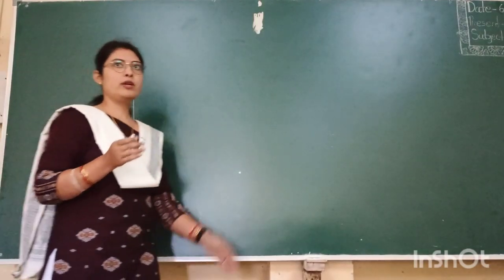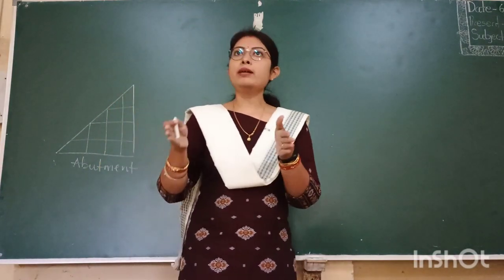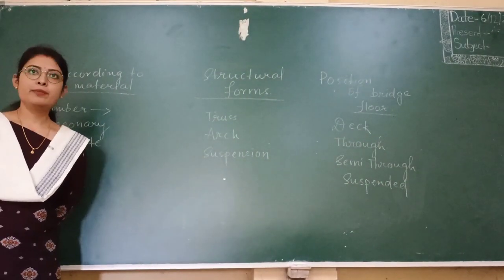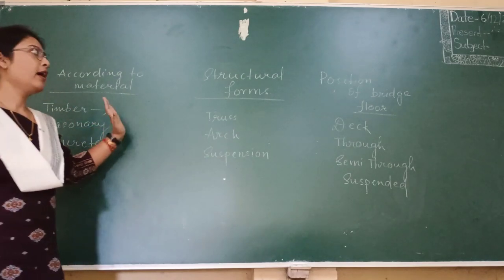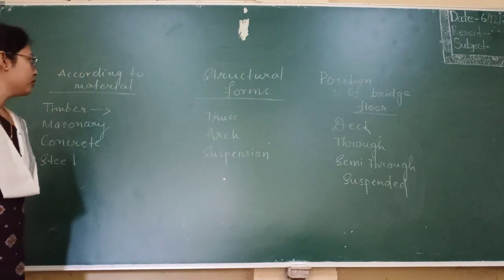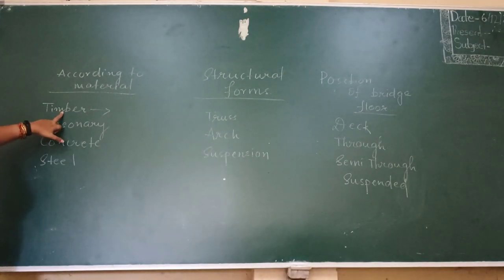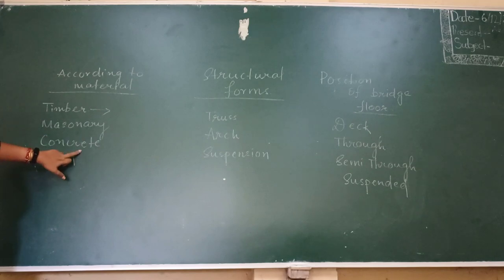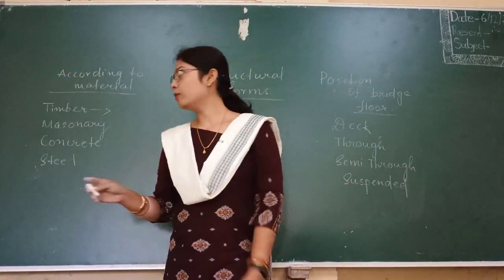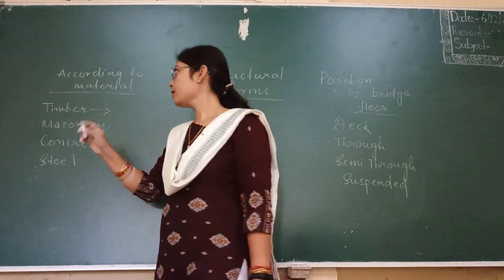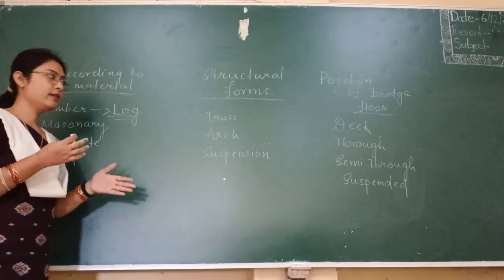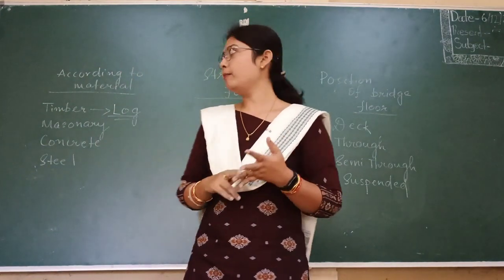Abutment is generally used to retain the soil and transmit the vertical load from the bridge to the soil. So next we can classify the bridge according to the material used — as timber, masonry, concrete and steel. The first bridge made by human beings was made of timber.